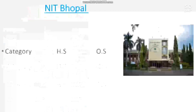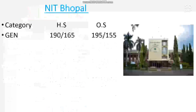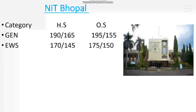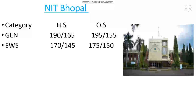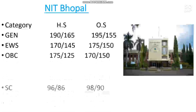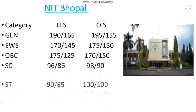The next is NIT Bhopal. The cutoff marks are: for general, 195; EWS, 175. If you want to know the percentile needed to get the EC branch in top 11 to 20 NITs or the lower or top 10 NITs, you can watch my other video — I have discussed the percentile required, check it in the eye button or description box. For OBC, 170 marks; SC, 98; and ST, 100 marks are required.